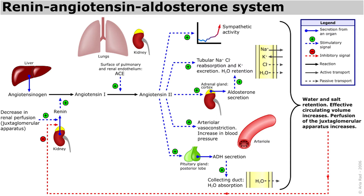When renal blood flow is reduced due to loss of blood volume or a drop in blood pressure, such as in hemorrhage or dehydration, juxtaglomerular cells in the kidneys convert the precursor prorenin already present in the blood into renin and secrete it directly into circulation.